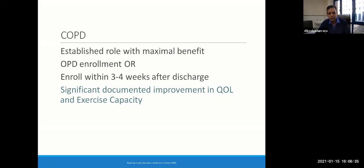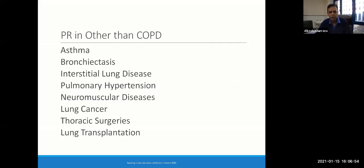We can enroll patients either on an OPD basis, or if the patient has been in-house, after a couple of weeks following hospital discharge. COPD is one condition where there is significant documentation of improvement in quality of life and exercise capacity. There are other diseases — asthma, bronchitis, interstitial lung diseases, pulmonary hypertension, neuromuscular diseases, lung cancer, thoracic surgeries, transplantation — where pulmonary rehabilitation has been tried with good results, but not as good as in COPD.